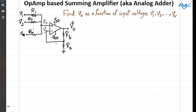Assuming that the voltage supplies Vdd and negative Vdd are properly set, we can assume this ideal op-amp is not saturated and is operating in linear mode. In linear mode, we apply the virtual short condition, which means the voltage at the two input terminals, V minus and V plus, are equal to each other. This is referred to as the virtual short.